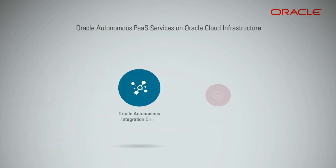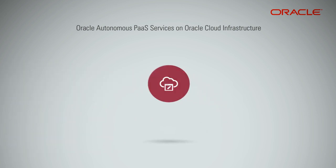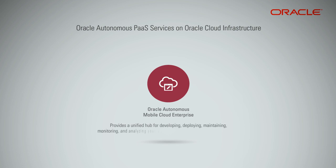Oracle Autonomous Integration Cloud is a unified platform where you can integrate your applications, automate processes, and create applications. Oracle Autonomous Mobile Cloud Enterprise, AMCE, is a cloud-based service that provides a unified hub for developing, deploying, maintaining, monitoring, and analyzing your mobile apps, intelligent bots, and the resources they rely on.